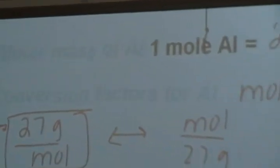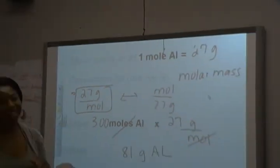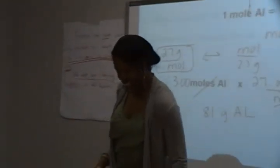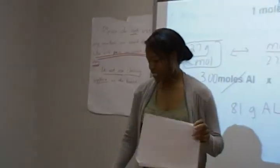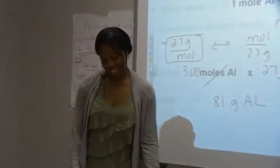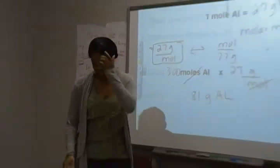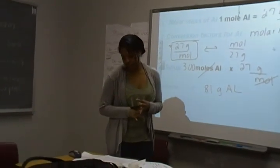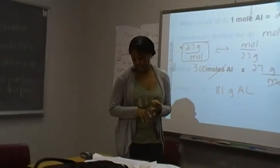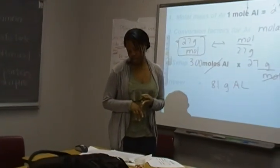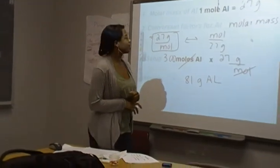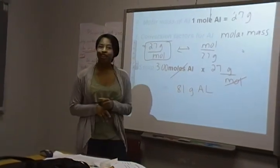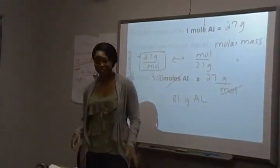The homework assignment is to practice what we did today. That's what chemistry is — a bunch of practice. The homework assignment is to figure out: if you're given 4 grams of nitrogen, oxygen, and fluorine, how many moles would that be?